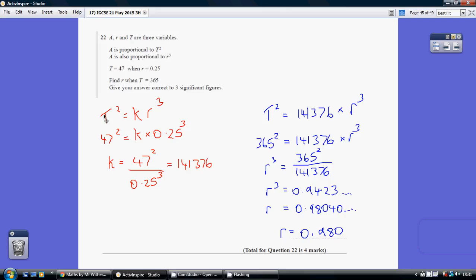So I've started off just by saying T squared is proportional to R cubed. In other words, T squared equals K times R cubed. Now, they give us a pair of values, so when T is 47, R is 0.25.